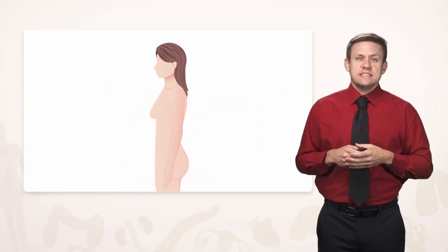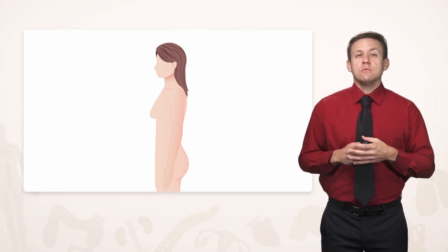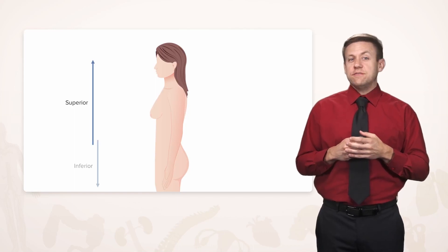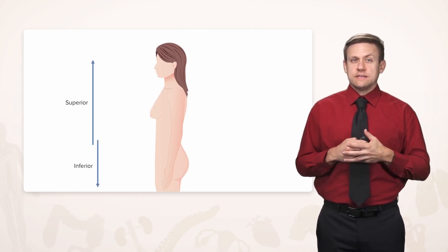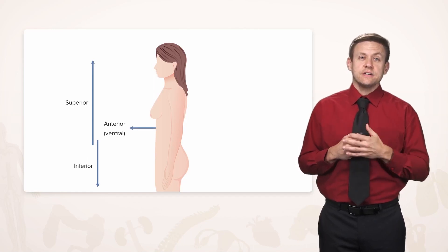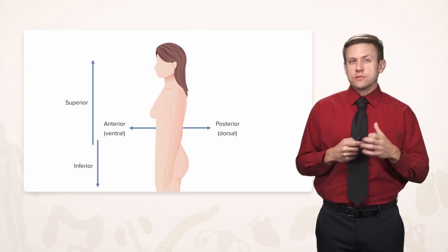If we turn around to the side, we see that we don't really say up or down. What we say is superior, closer to the head, or inferior, closer to the feet. We also don't say front or back. We tend to say anterior, or ventral, and posterior, or dorsal.